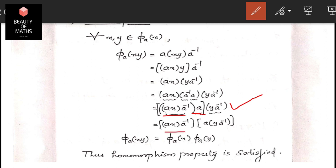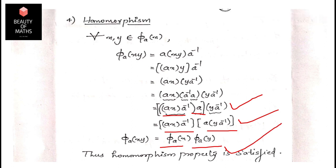Continuing with the associative property, a·x·y·a⁻¹ = (axa⁻¹)(aya⁻¹), which equals φ_a(x) · φ_a(y). This means the homomorphism property is satisfied, and φ_a is an isomorphism — hence an automorphism of G.